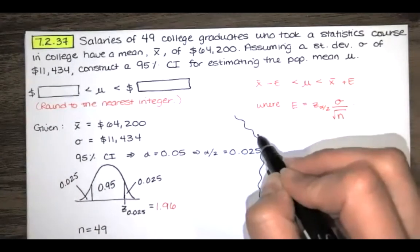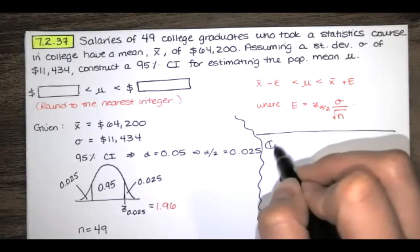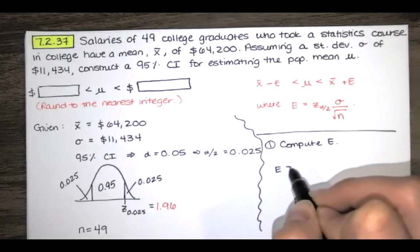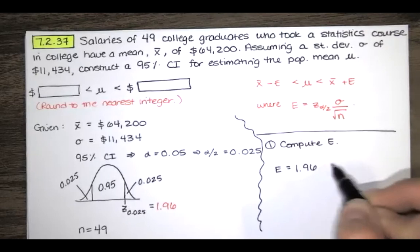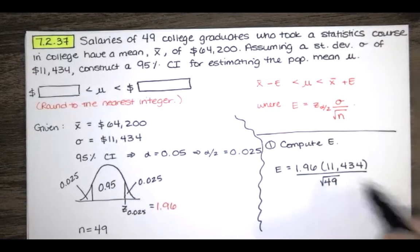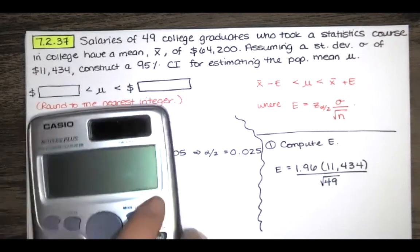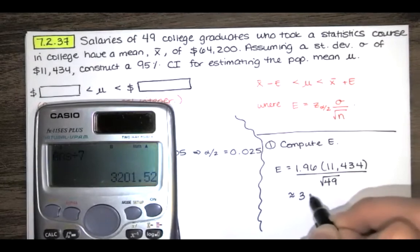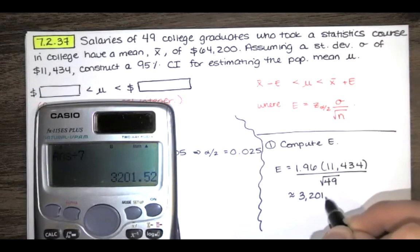So now let's compute the error. The margin of error. So that's our critical value of Z times the standard deviation, which happens to be known as population standard deviation, and we're dividing by the square root of the sample size. And I will use a calculator for my arithmetic. Square root of 49 is seven. And we get a margin of error of approximately 3,201.52.